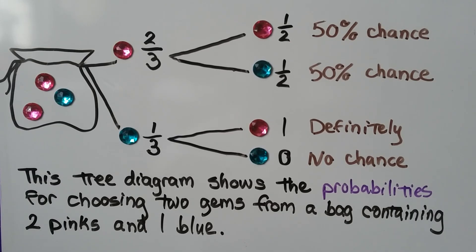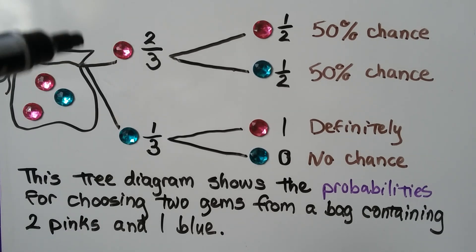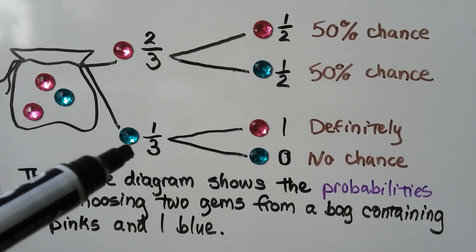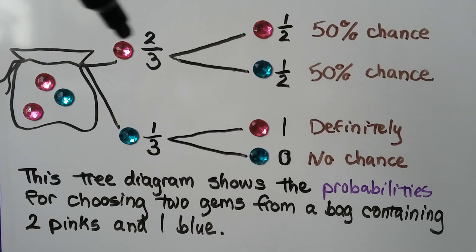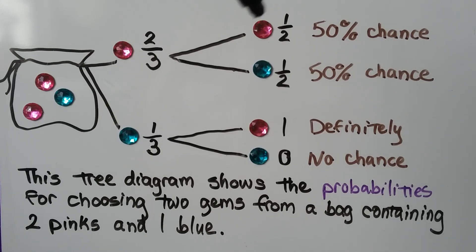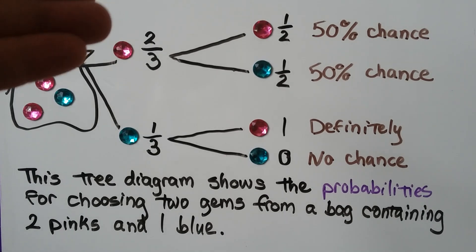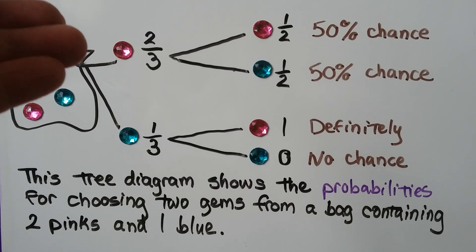Here's a tree diagram that shows the probabilities for choosing two gems from a bag containing two pinks and one blue. The first time we pick, we have a two-thirds chance of getting a pink and a one-third chance of getting a blue one. If we pick the pink one, we now have a 50% chance — one-half probability — of getting a pink, because one pink is already out. Now there's just a pink or a blue left.